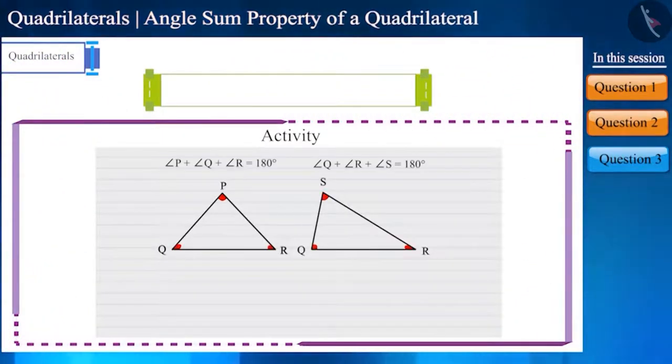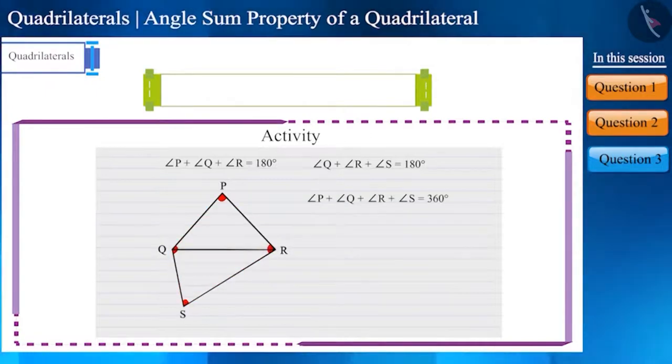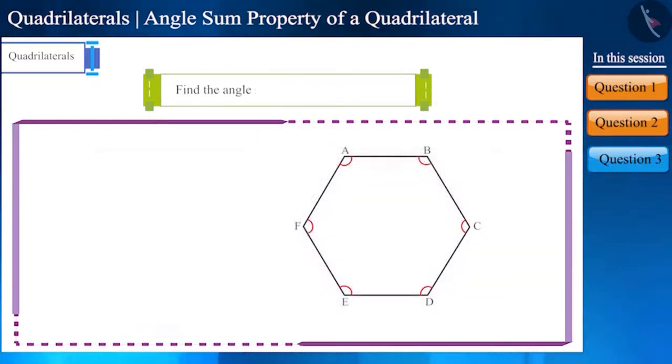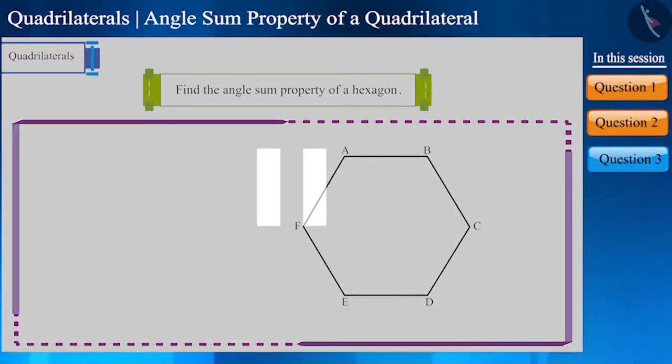Let's take one more question, friends. To show or prove the angle sum property of the quadrilateral, we have divided it into two triangles. With the help of the same concept, find the angle sum property of a hexagon. Friends, how do we solve this question? Pause the video and think about it.